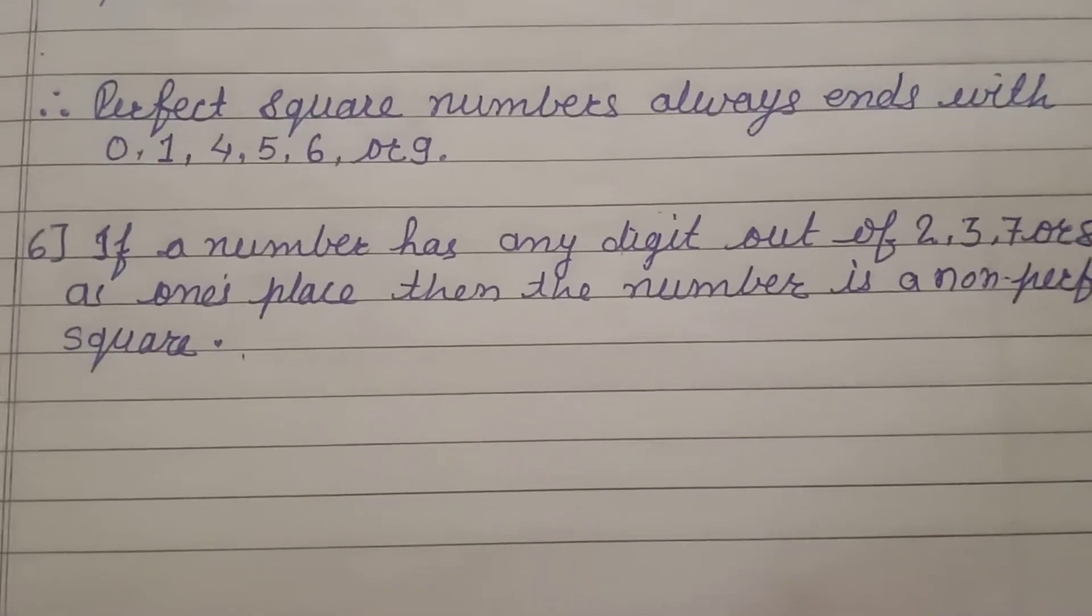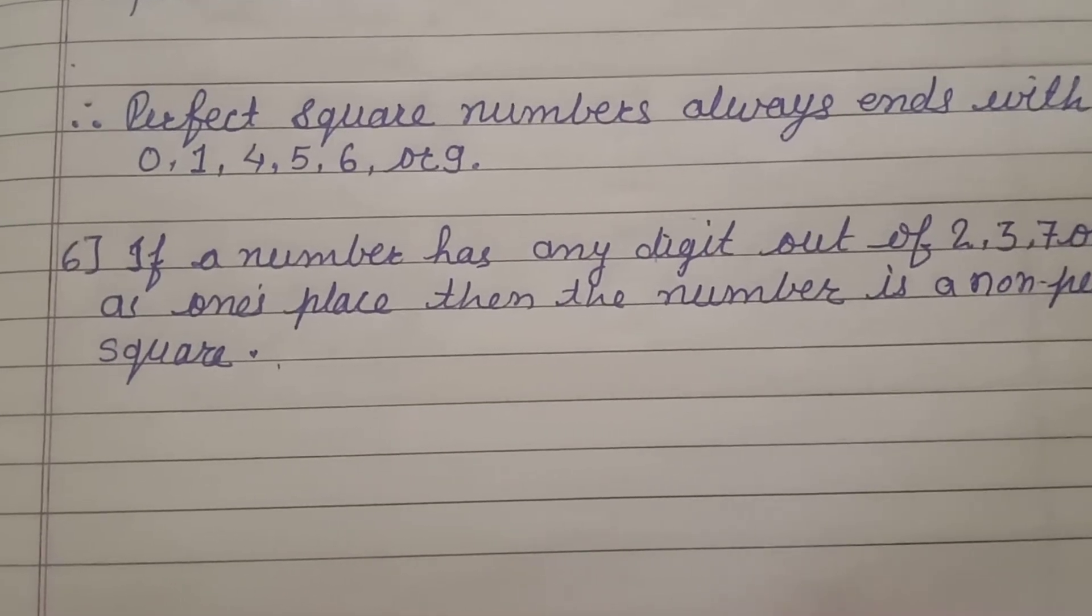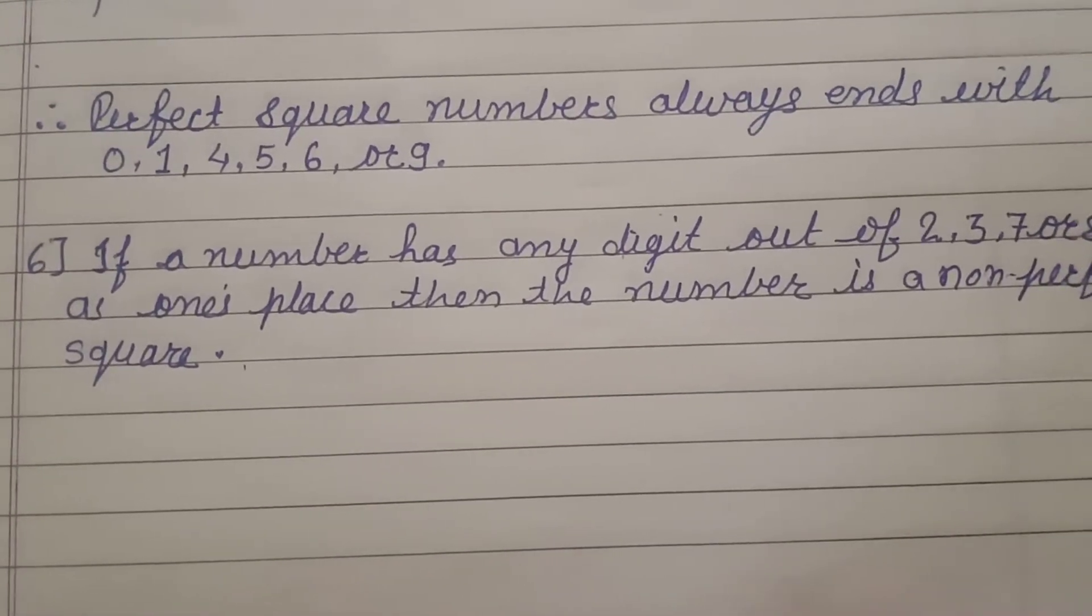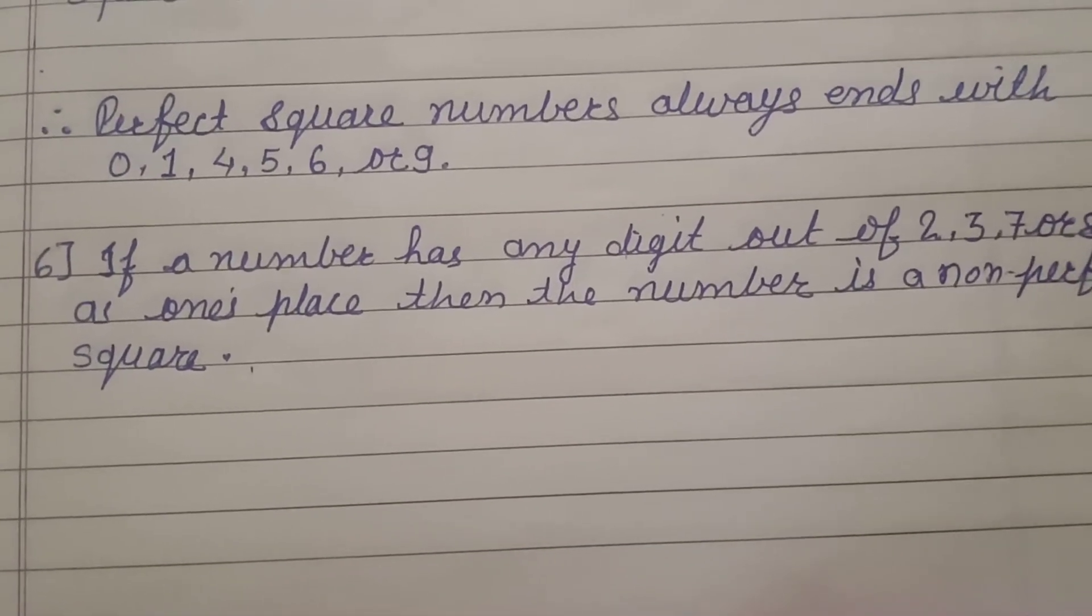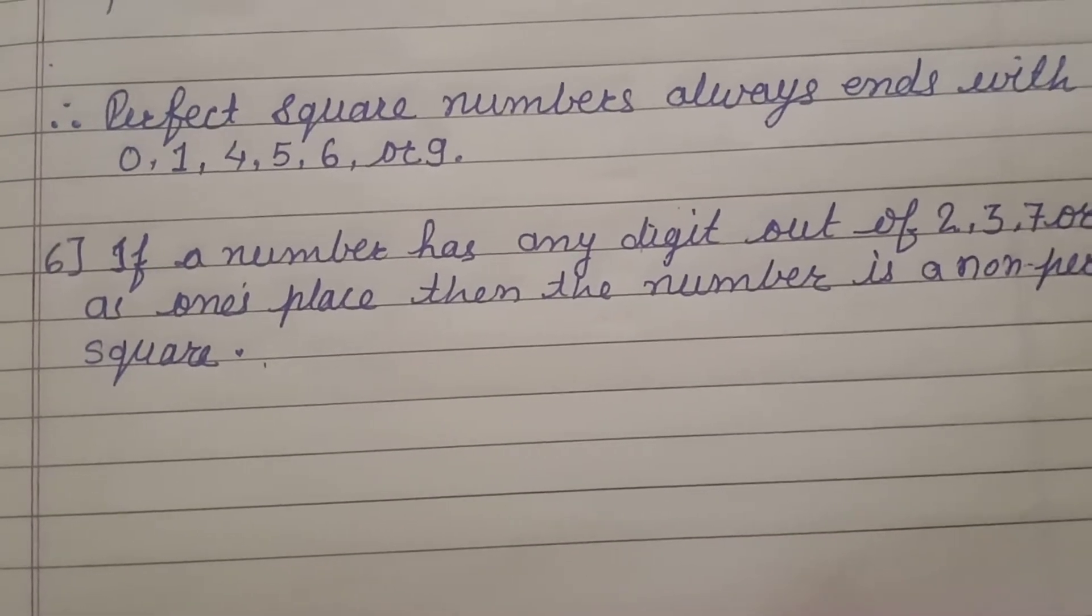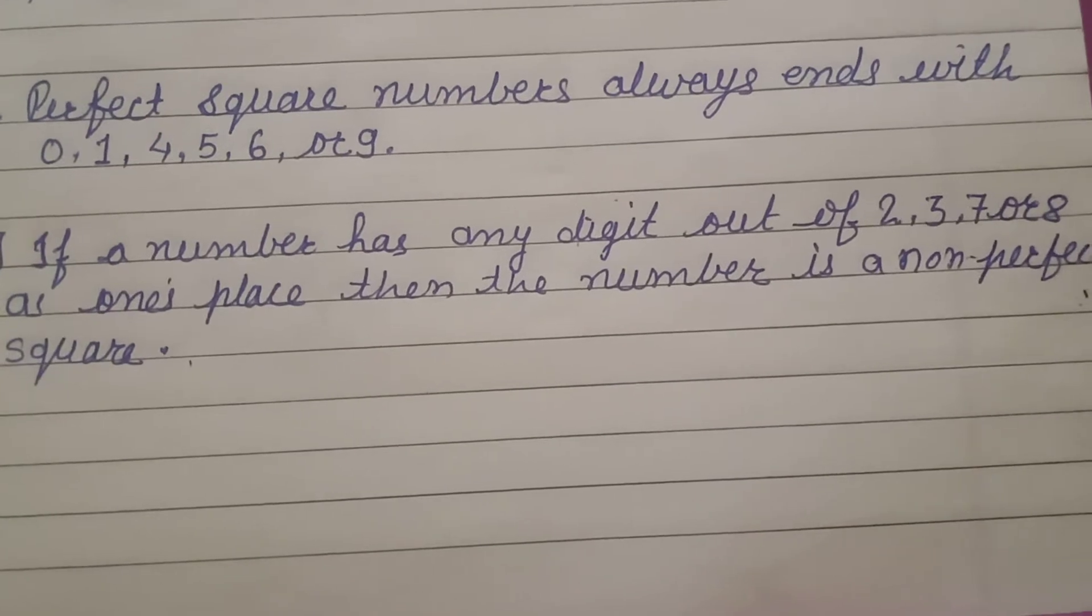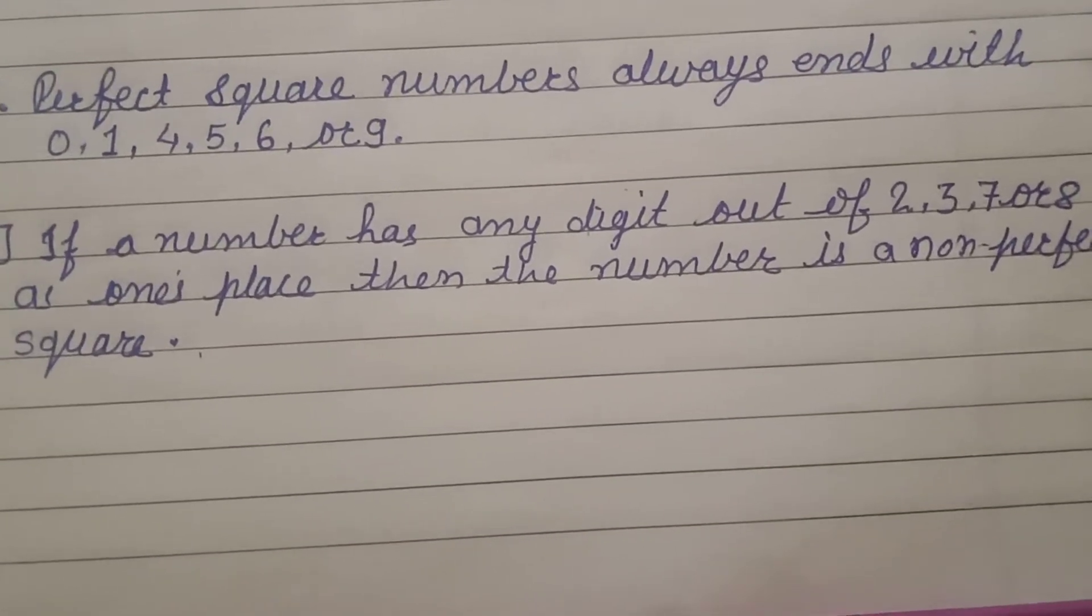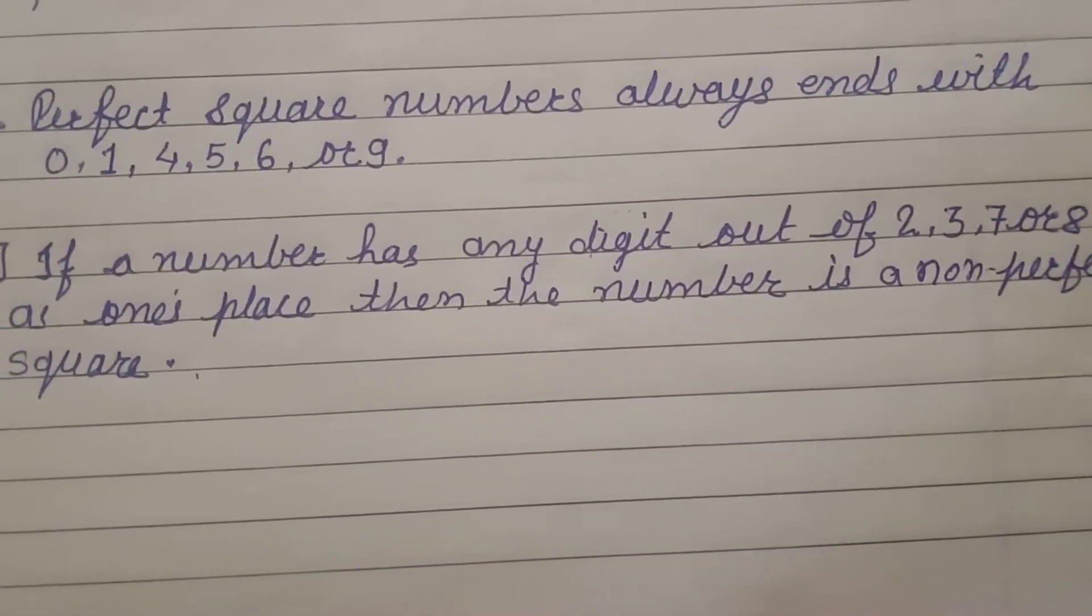Good morning dear students. In previous session we have seen properties of square numbers with the help of their ones places and we concluded that a perfect square number will always end with either 0, 1, 4, 5, 6 or 9 and a perfect square number can never have 2, 3, 7 or 8 as its ones place. Now let's continue with this topic.